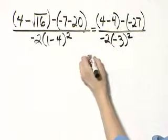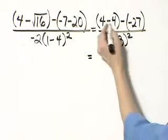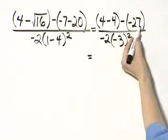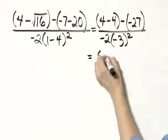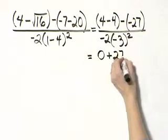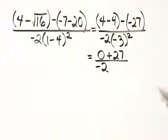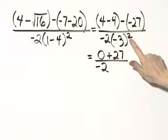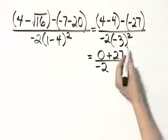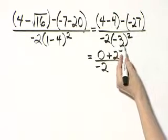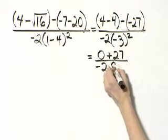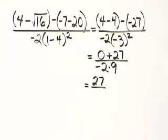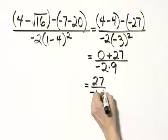Now let's continue working in the numerator and the denominator separately. 4 minus 4, that is 0. And 0 minus a negative 27, that's 0 plus 27. In the denominator, I have negative 2 times negative 3 squared. Remember, raising a number to a power is higher in order of operations than multiplication. So next I'll find negative 3 quantity squared — that's negative 3 times negative 3, or positive 9. Negative 2 times 9, that is negative 18.